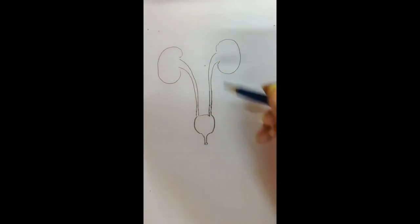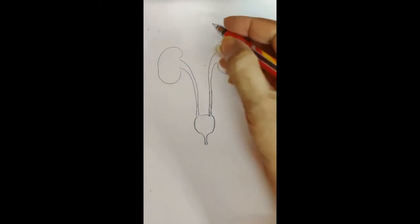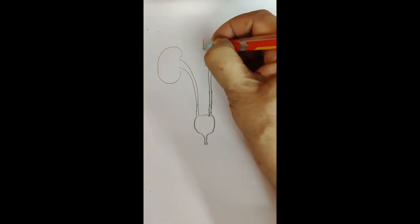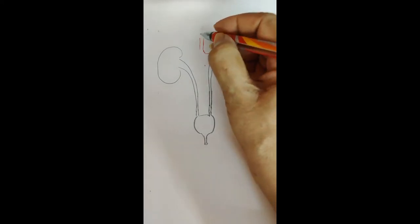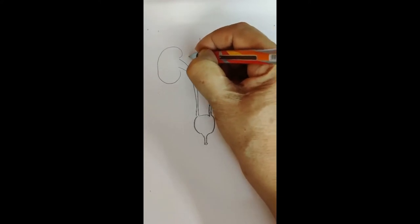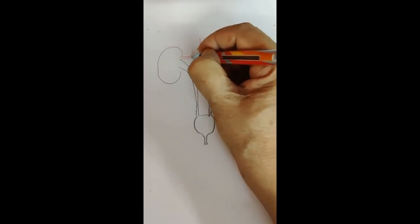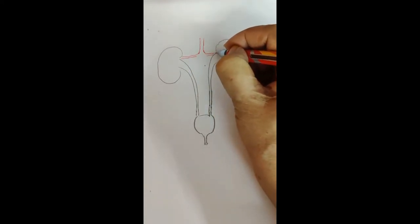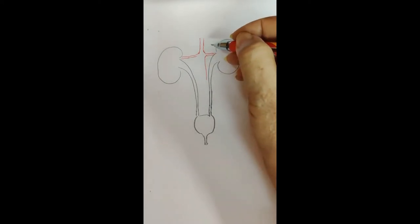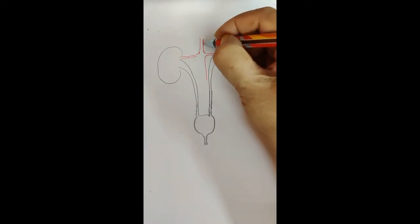Now these two kidneys are supplied with blood. First of all, the dorsal aorta comes from the heart, and now these are the branches coming from the aorta, they are called the renal arteries. Renal arteries are the blood vessels which carry maximum amount of urea and uric acid, but they are carrying oxygenated blood. So we can show them in shaded form, they are red in color.